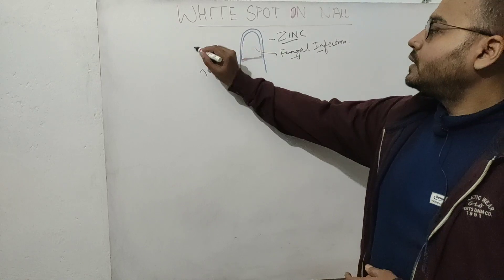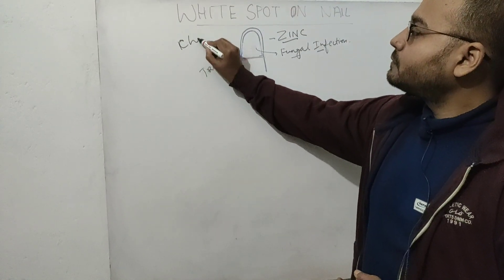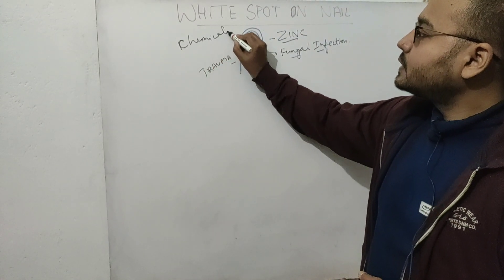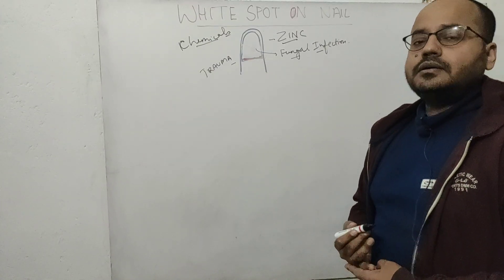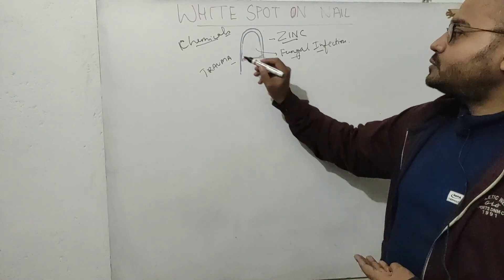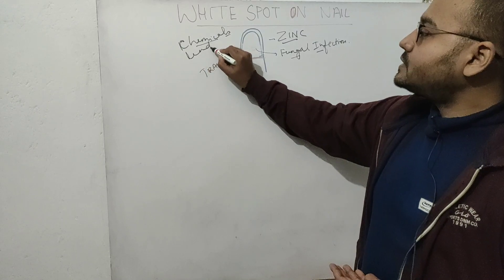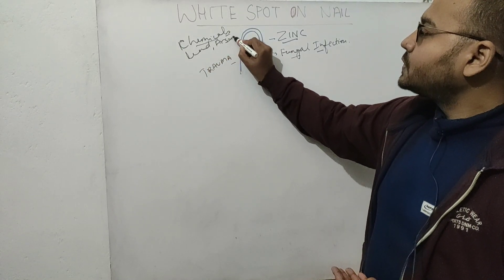So drugs, chemicals, and then heavy metal poisoning can also cause white spots, especially lead and arsenic.